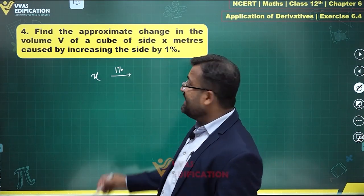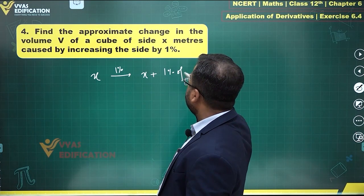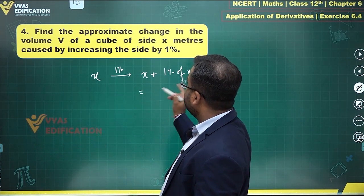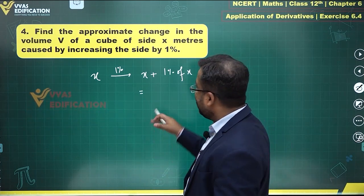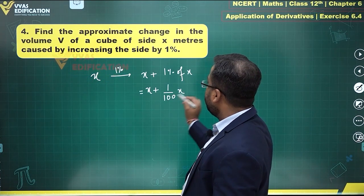Now, increasing the side by 1% means the side length has become x plus 1% of x. This tells me that the side, the change, is x plus 1/100 times x.